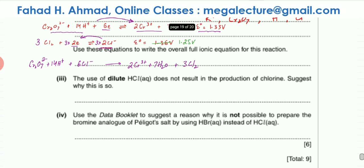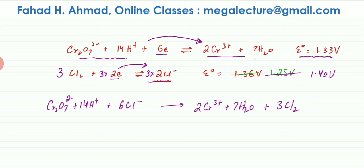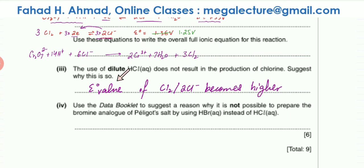Part c(iii): the use of dilute HCl does not result in the production of chlorine — why? If Cl⁻ is diluted, the equilibrium shifts to the right, electrons are consumed, and the E° of Cl₂/Cl⁻ becomes more positive — for example, 1.40 V. This would now be the higher potential, meaning it would gain electrons instead of losing them. So the reaction would become unfeasible; it only works when Cl⁻ is concentrated, shifting the equilibrium to the left.